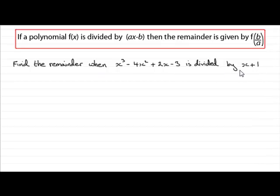And to do something like this, rather than do algebraic long division, we could use the remainder theorem, what we've got up here. And that is if a polynomial f of x is divided by ax minus b, then the remainder is given by f of b over a.